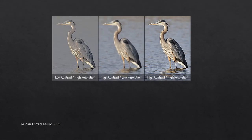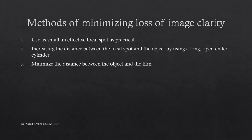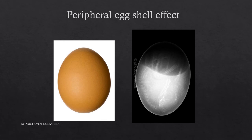To achieve good image quality, contrast and resolution must be balanced — high contrast with low resolution or high resolution with low contrast are not ideal. Methods to minimize loss of image clarity include using the smallest effective focal spot practical, increasing the distance between the focal spot and the object using a long open-ended cylinder, and minimizing the distance between the object and the film.